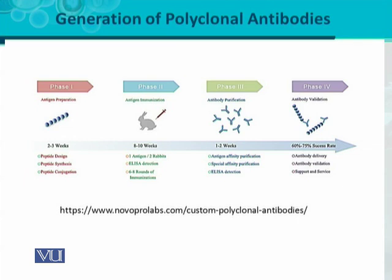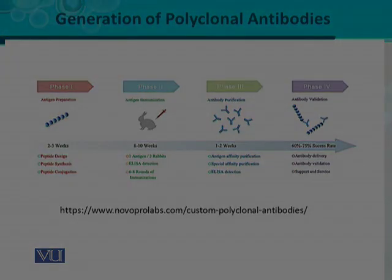The last phase, phase four, is antibody validation, which can have a success rate of around 60 to 75 percent. After antibody purification, we check that the antibody has good delivery and validity. The binding affinity and specificity to its corresponding antigen — the antigen synthesized in phase one — determines the validity of that particular polyclonal antibody generated using all four phases.